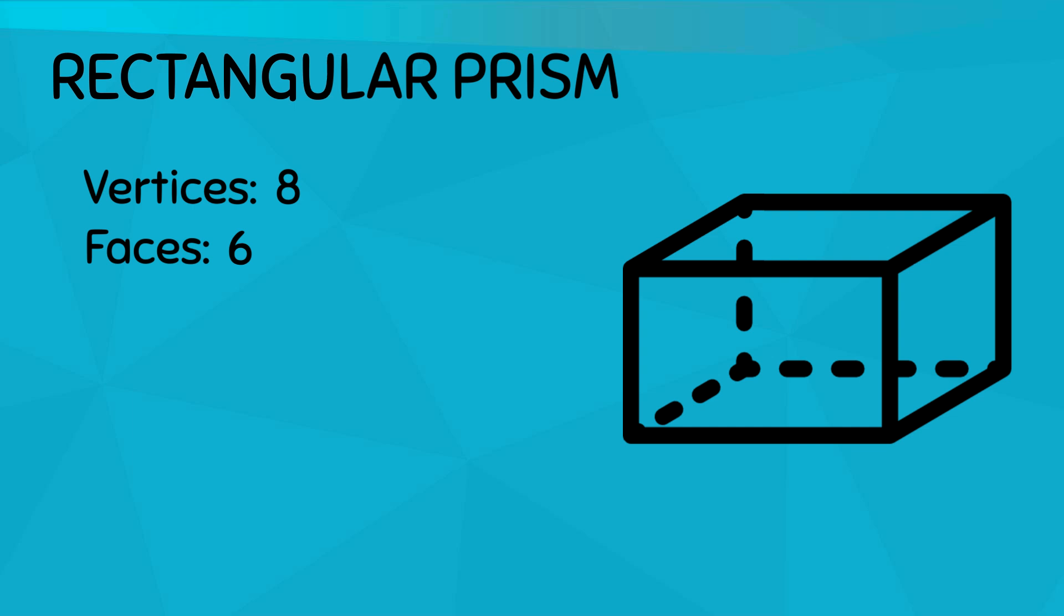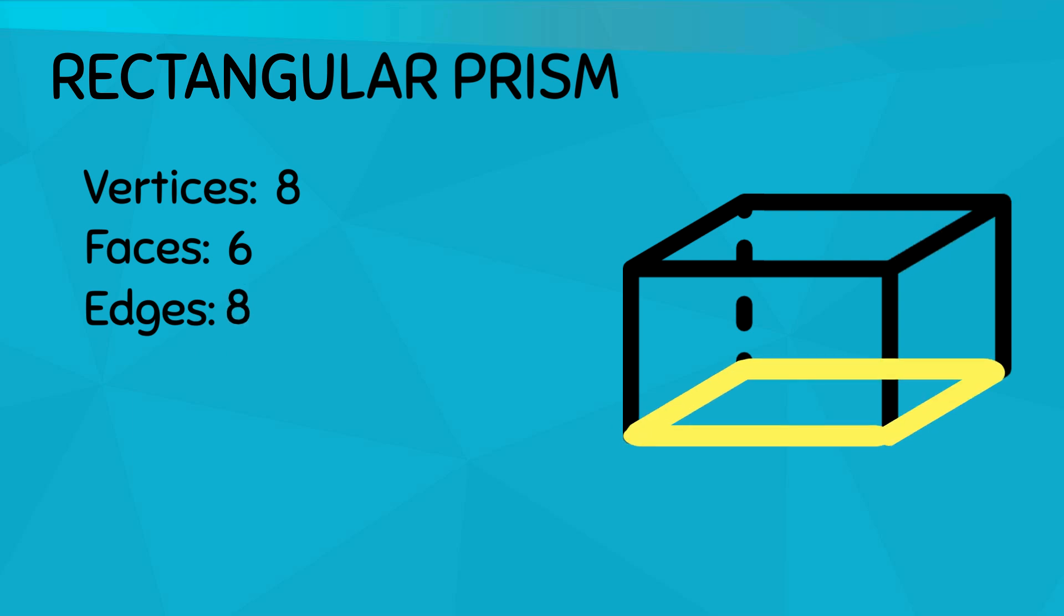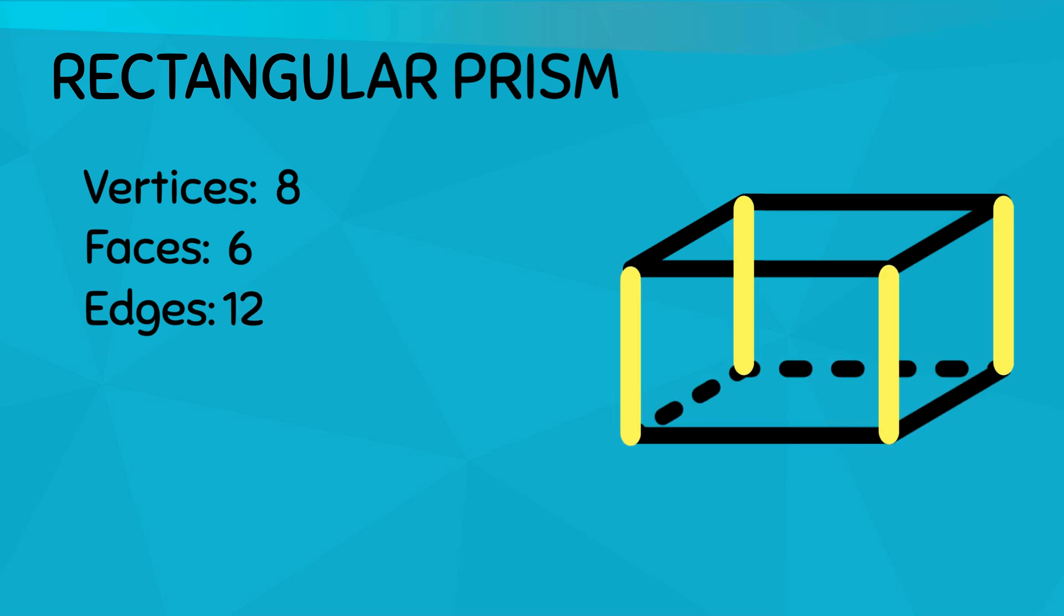Lastly, let's count the edges. Remember, an edge is where two faces meet and forms a line. So can you try to guess how many edges we have here? Let's see if you guessed right. We actually have one, two, three, four at the top and another four at the bottom and another four on this side, so that's a total of 12 edges. Whoa, that's a lot of edges!